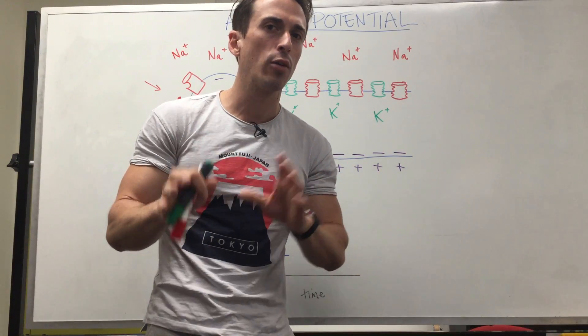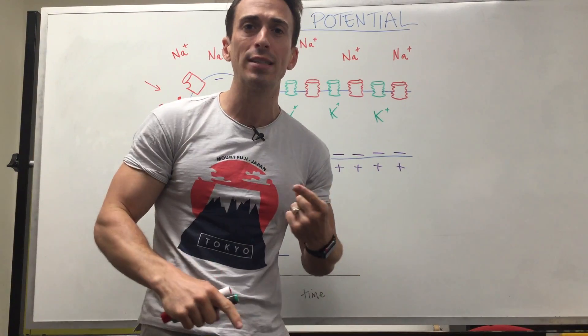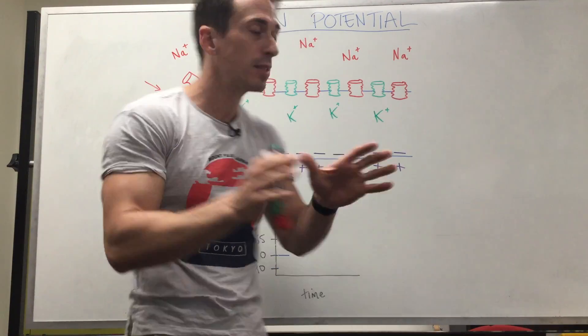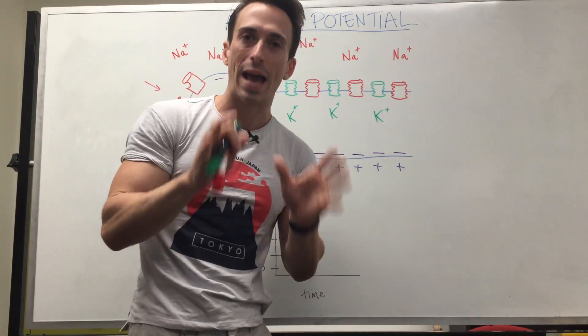We've got positively charged potassium which sits predominantly inside the cell. We don't really need to talk about the other ions in this video - remember there's chloride Cl-, magnesium Mg2+, there's so many different types, but these are the two that we need to focus on for an action potential.